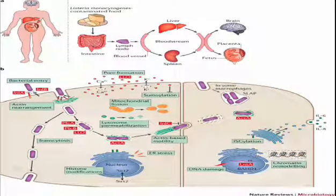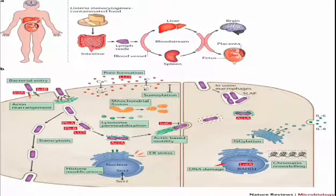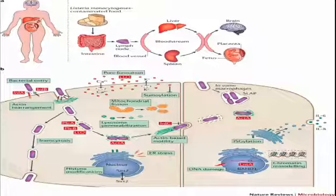This cycle shows how Listeria can be ingested through raw meat and unpasteurized milk products, then traveling towards the intestine, lymph nodes, liver, spleen, brain, placenta, and fetus through the bloodstream.